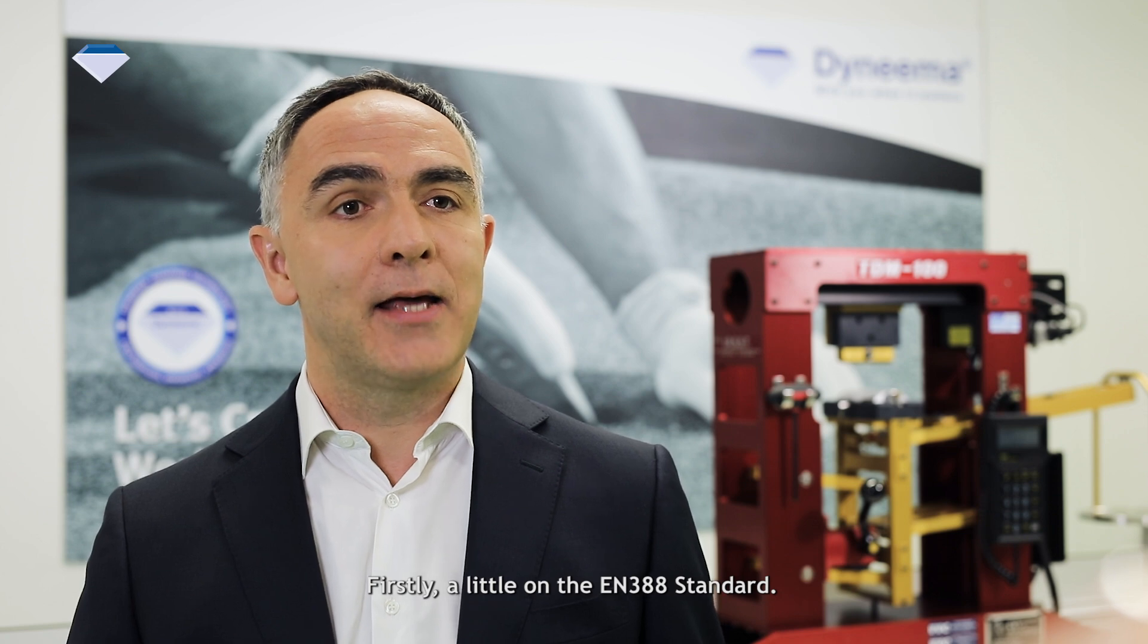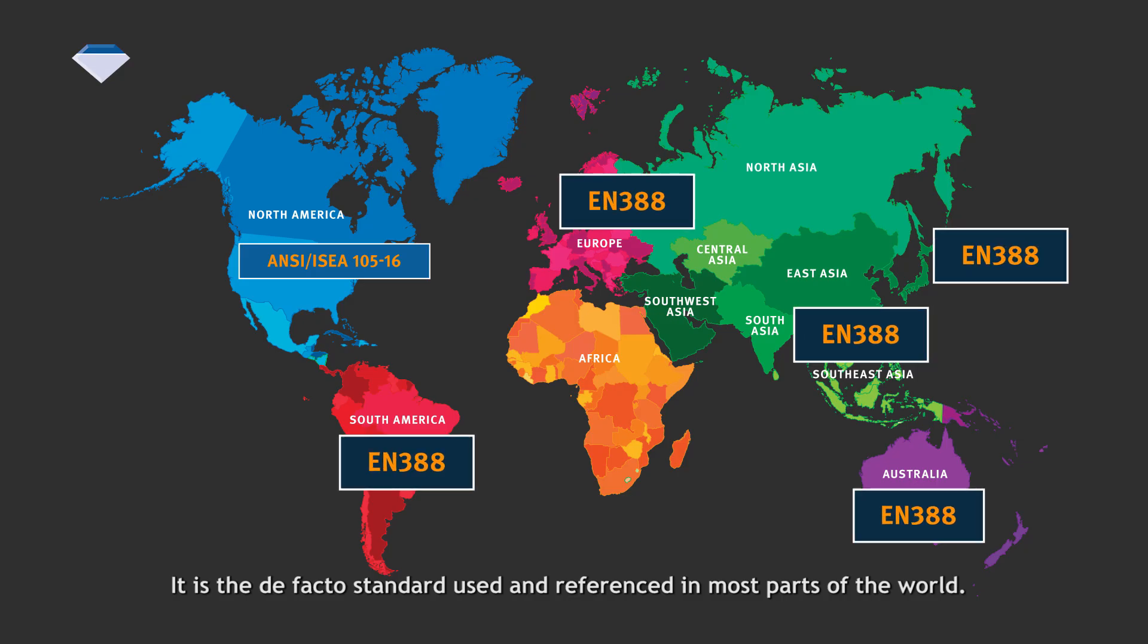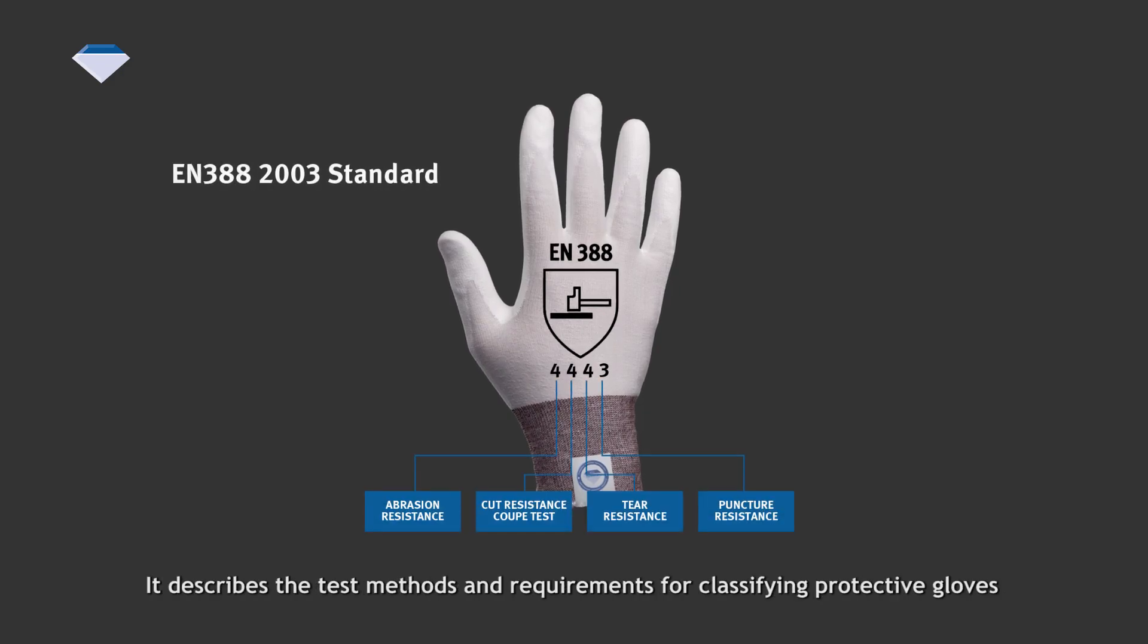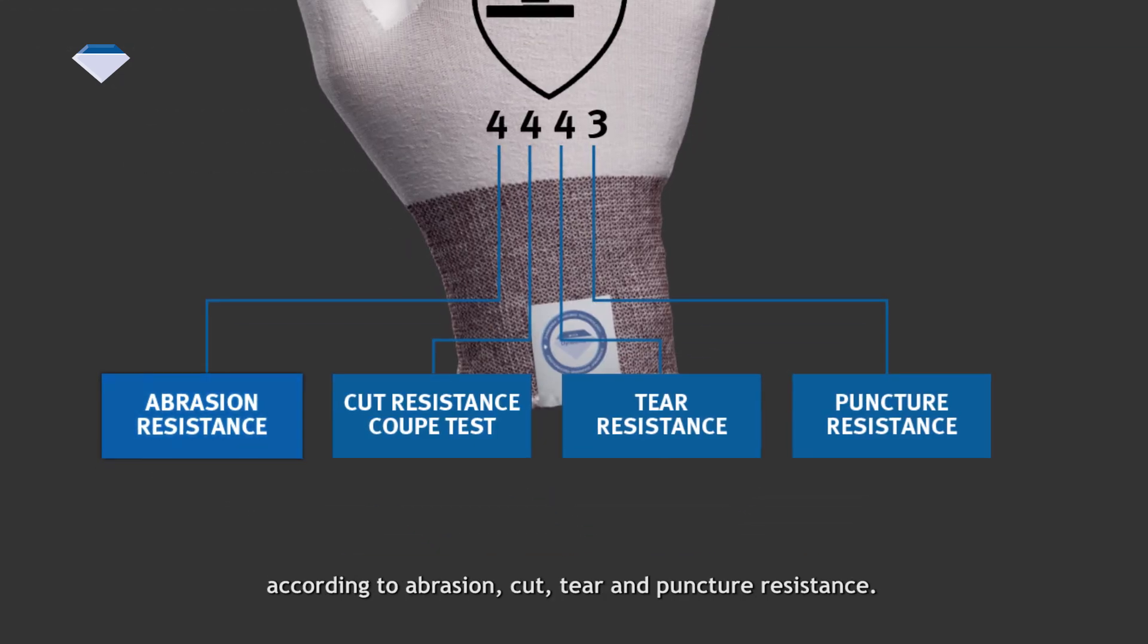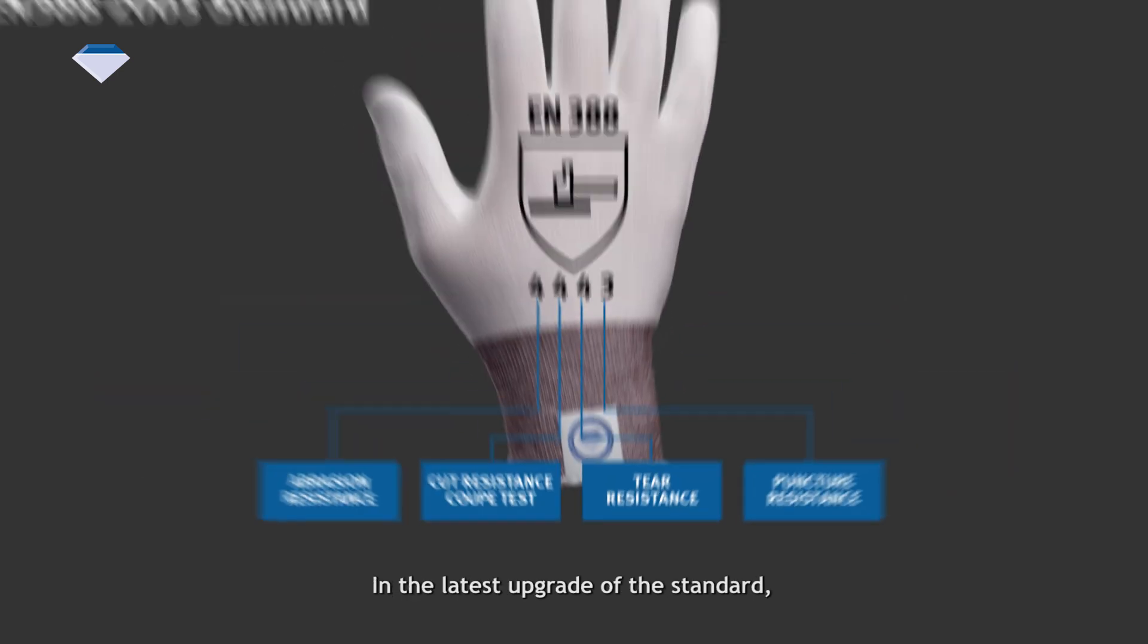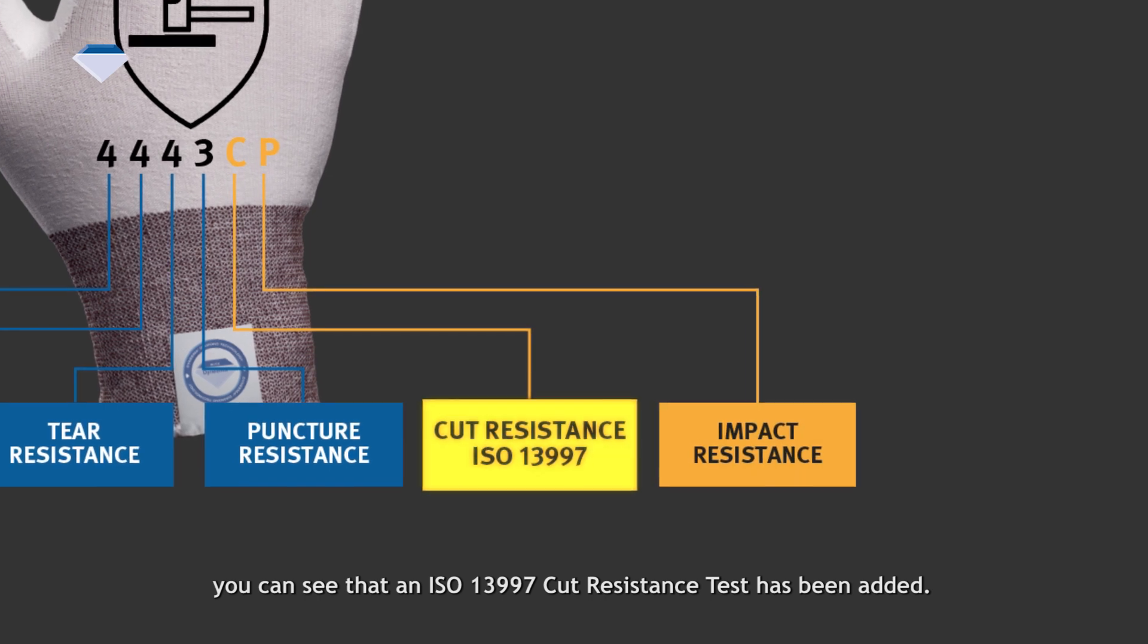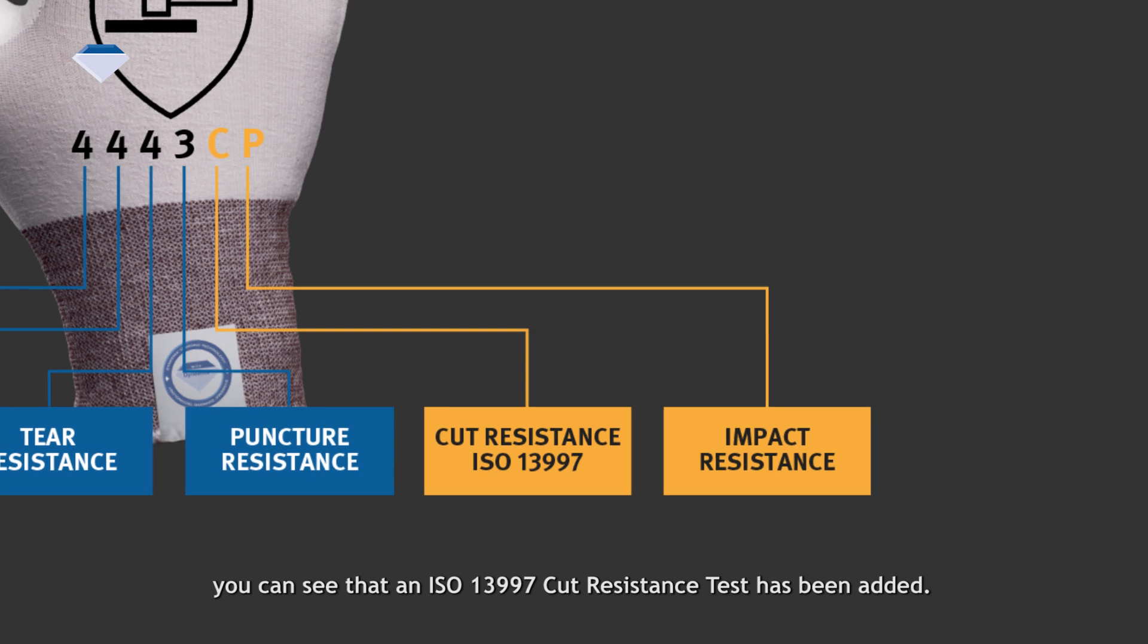First, a little on the EN388 standard. It is the de facto standard used and referenced in most parts of the world. It describes the test methods and requirements for classifying protective gloves according to abrasion, cut, tear, and puncture resistance. In the latest upgrade of the standard, you can see that an ISO 13997 cut-resistant test has been added.